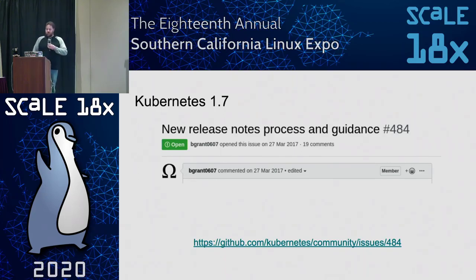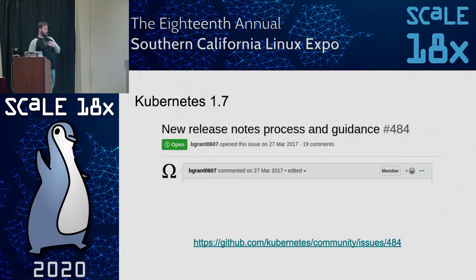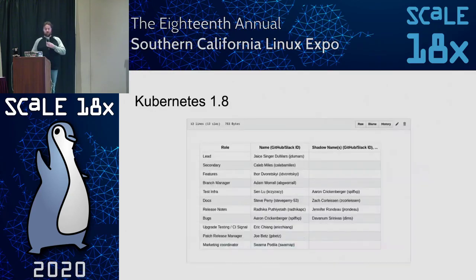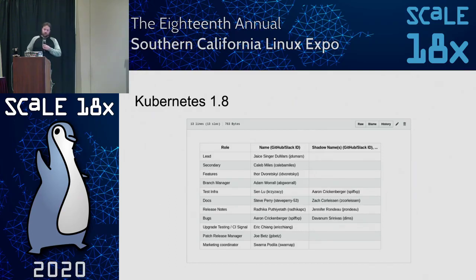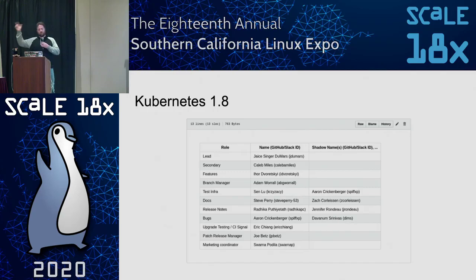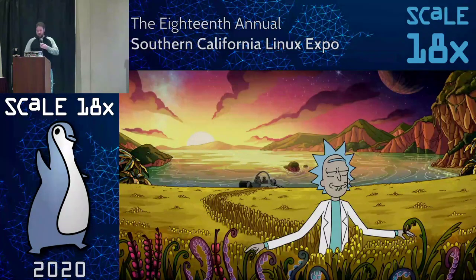In Kubernetes 1.7, Brian Grant filed a very lengthy issue called 'new release notes process and guidance,' because the release notes being published were incredibly long and very difficult to parse. In Kubernetes 1.8, the release notes role became part of the release team — one of the direct actions from Brian Grant's issue.